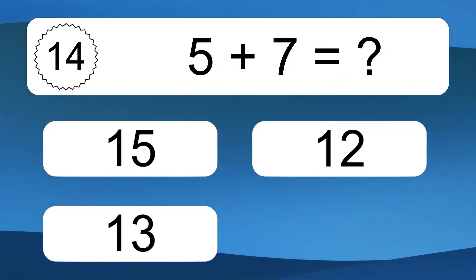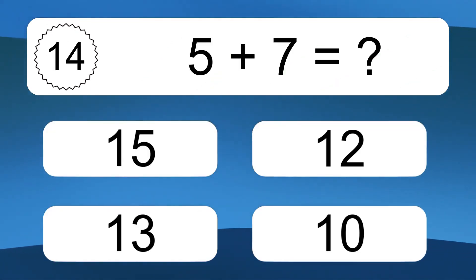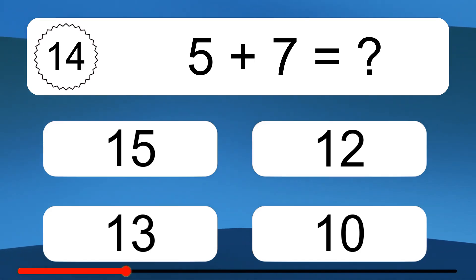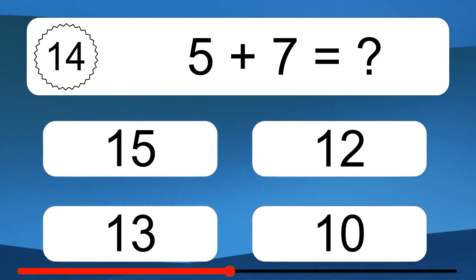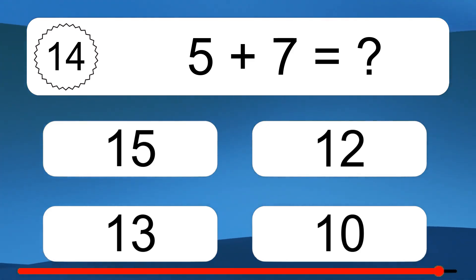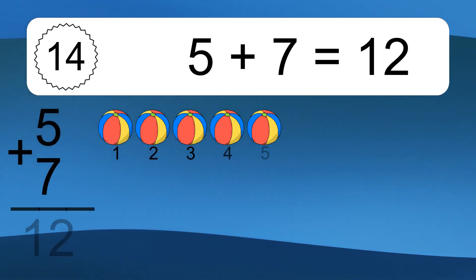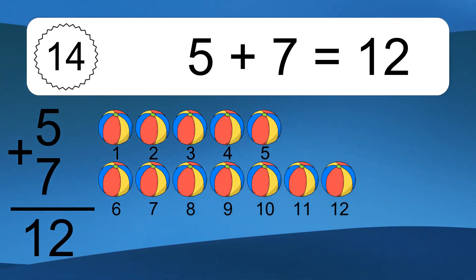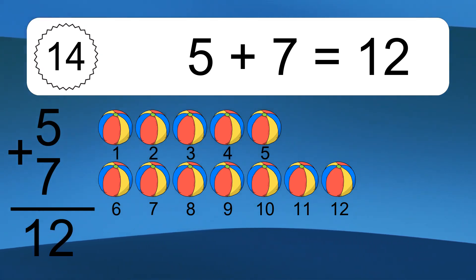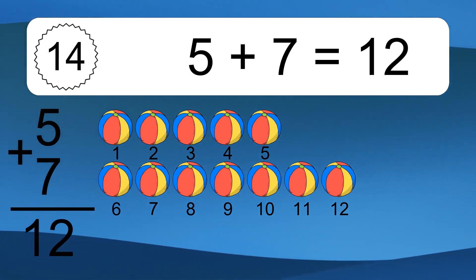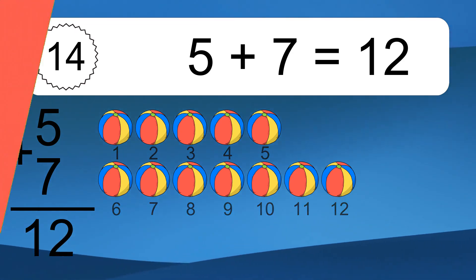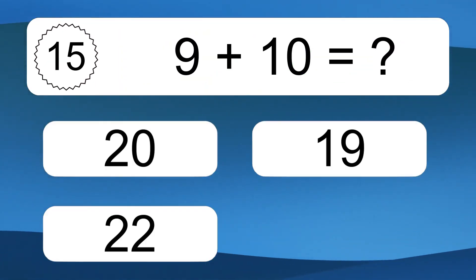5 plus 7 equals what? 5 plus 7 equals 12. Let's count it: 1, 2, 3, 4, 5, 6, 7, 8, 9, 10, 11, 12.